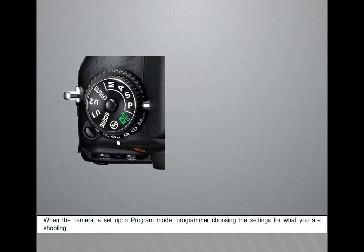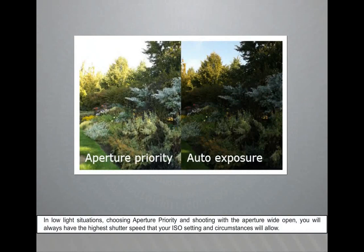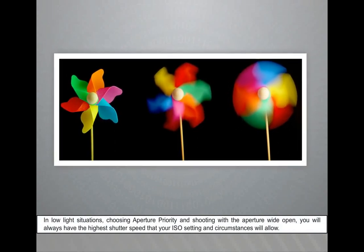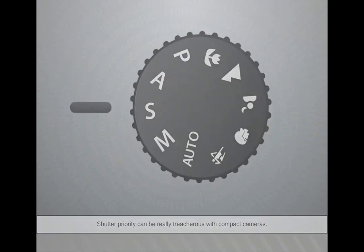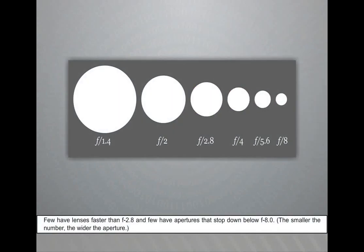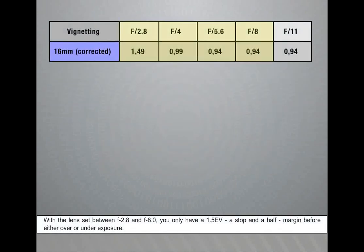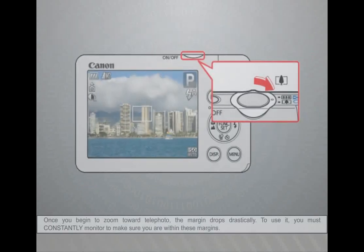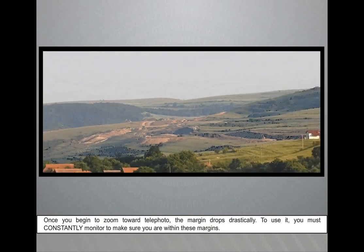By increasing the ISO setting there is an increase in noise in most cameras. However, given a choice between a tack-sharp image with considerable graininess compared to a satiny image blurred beyond recognition, grain is preferable. When the camera is set on program mode, a programmer is choosing the settings for what you are shooting. In low light situations, choosing aperture priority and shooting with the aperture wide open will always give you the highest shutter speed that your ISO setting and circumstances allow. Shutter priority can be treacherous with compact cameras — few have lenses faster than f/2.8 and few have apertures that stop down below f/8.0, giving only a 1.5 EV margin before either over or underexposure.